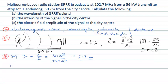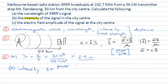Now let's move on to the second part: the intensity of the signal at the city centre, which is 50 kilometres from the transmission tower. Intensity is given by the Poynting vector, and if we look at the units carefully, intensity is really power divided by area — it tells us the rate at which energy is moving across a particular area. Since we know the total power is 56 kilowatts, we need the power per unit area at 50 kilometres from the transmission point.